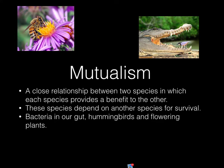Mutualism is a close relationship between two species in which each species provides a benefit to the other. Like this bee and flower interaction — the bee carries pollen away while the flower provides nutrients for the bee. Over here we have a bird cleaning the mouth of a crocodile — a mutualistic relationship because both benefit. Bacteria in our gut is another example: good bacteria fights off bad bacteria, while we provide nutrients for that bacteria.